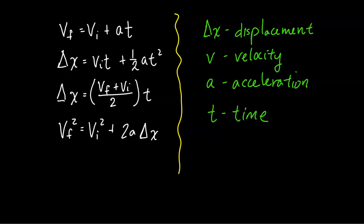The variables are: delta x for displacement, v for velocity, a for acceleration, and t for time. These kinematic equations are used for problems dealing with constant acceleration. In the next video, I'll show you a kinematics chart that will help you decide which equation to use for a particular problem.